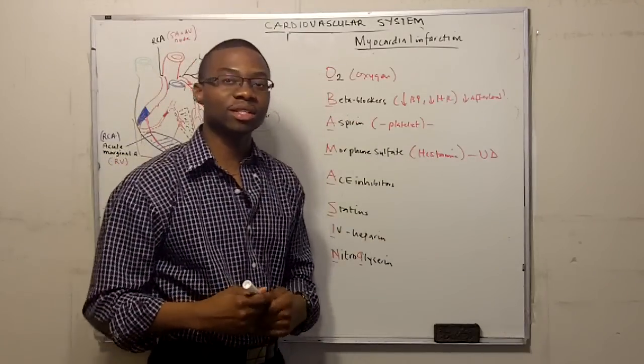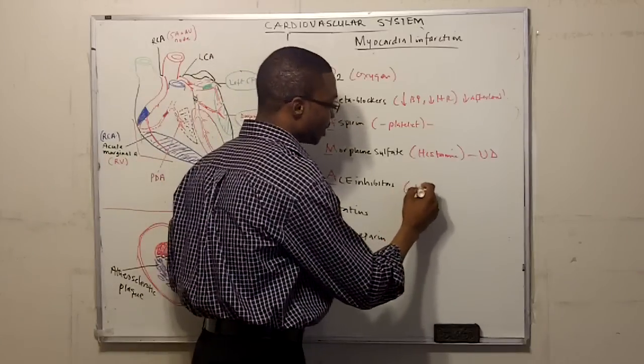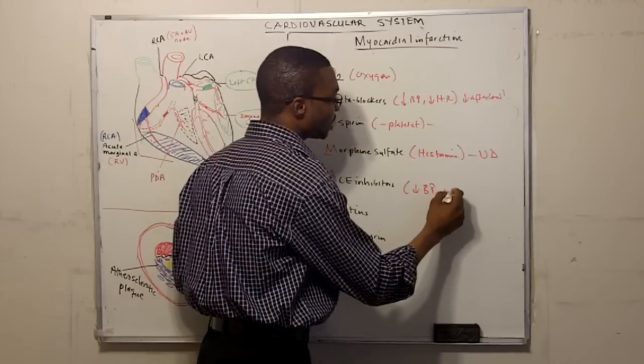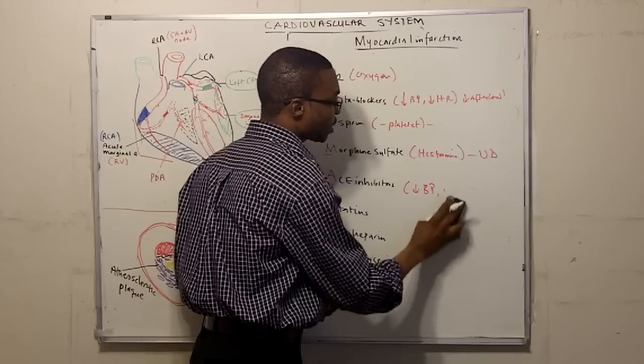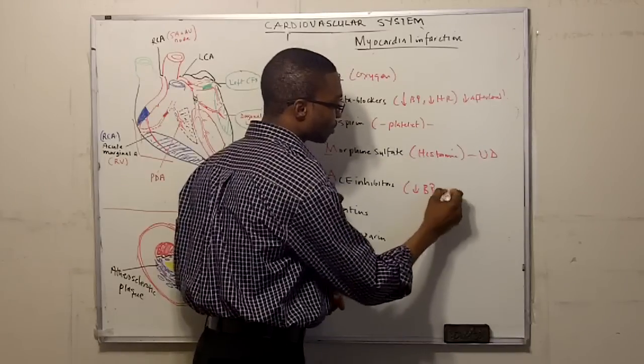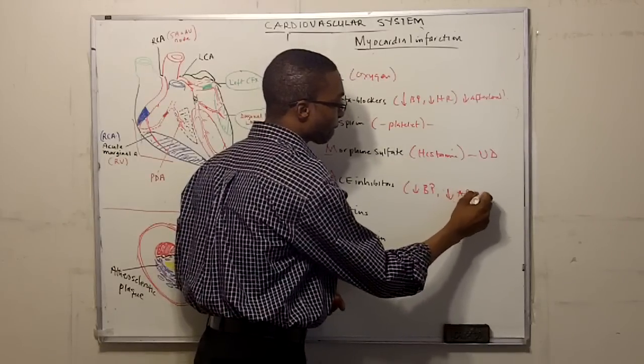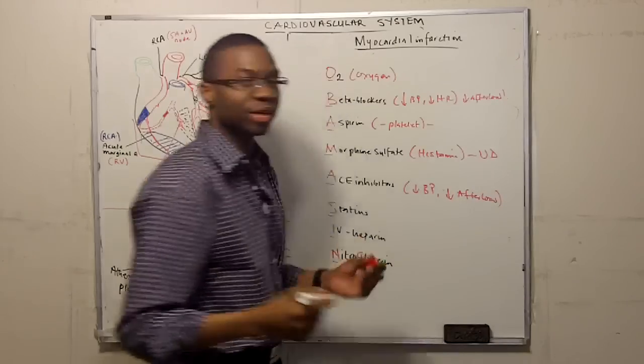You have to put them on ACE inhibitors, because ACE inhibitors are also going to decrease their blood pressure, decrease their afterload. They prevent vasoconstriction over their blood vessels and also prevent heart remodeling.